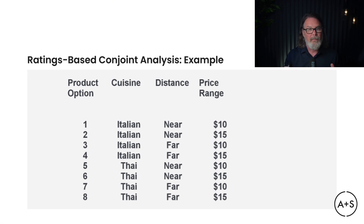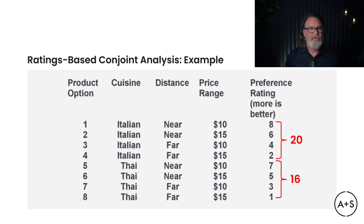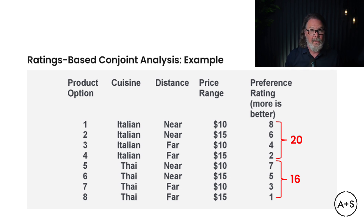The eight different product combinations are the product profiles — each a different combination of the various attributes and levels. Participants would then be asked to rank or rate each of the products on a scale from 1 (less appealing) to 10 (most appealing), or rank them with 8 being the best down to 1 being the least. When they do that, they start to assign values to the different options.